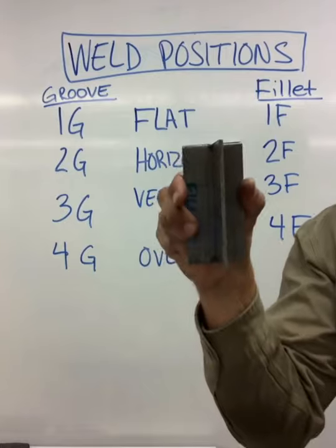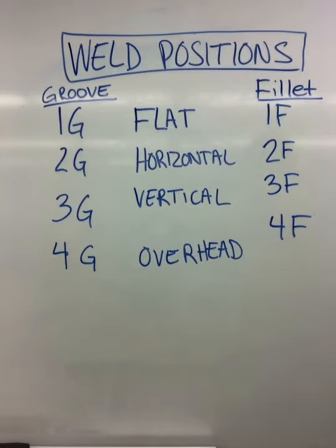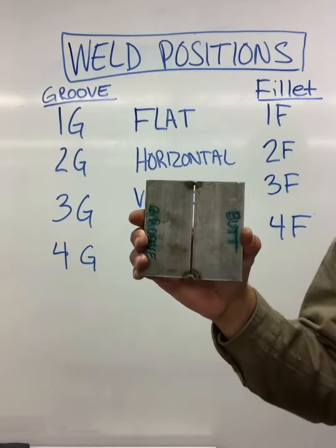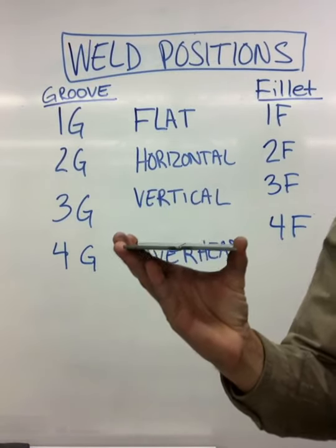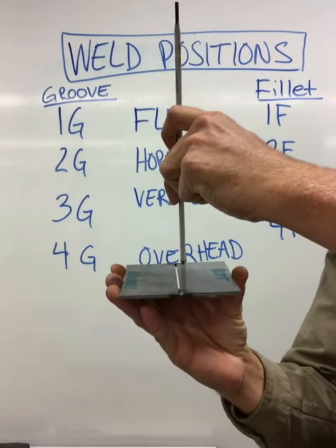So 1F, 2F, 3F, and 4F. I'm going to use the butt weld as the example for the grooves. Flat: this one literally you could set it on a workbench and weld. The rod is coming in at a 90-degree angle. So this would be 1G.